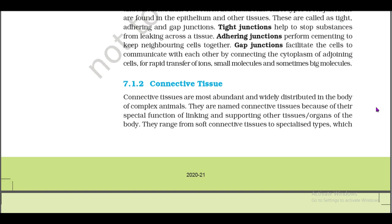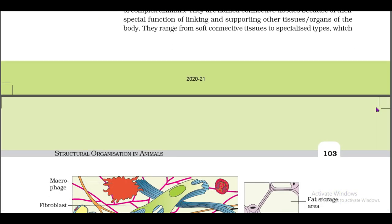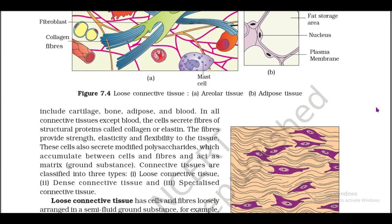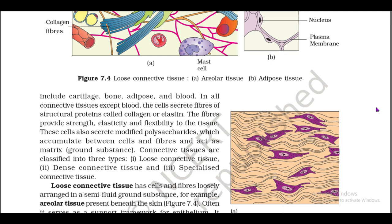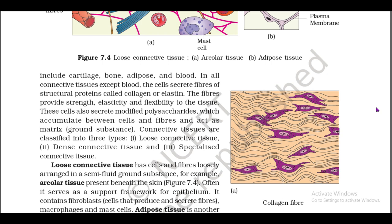7.1.2: Connective Tissues. Connective tissues are the most abundant and widely distributed in the body of complex animals. They are named connective tissues because of their special functions of linking and supporting other tissues and organs of the body. They range from soft connective tissues to specialized types which include cartilage, bone, adipose, and blood. In all connective tissues except blood, the cells secrete fibers of structural proteins called collagen or elastin, which provide strength, elasticity, and flexibility to the tissues.